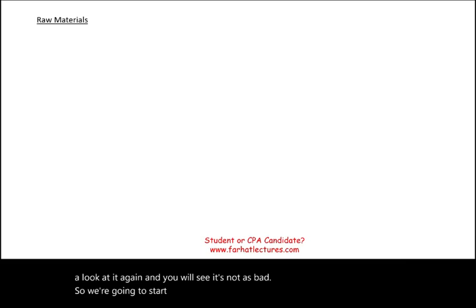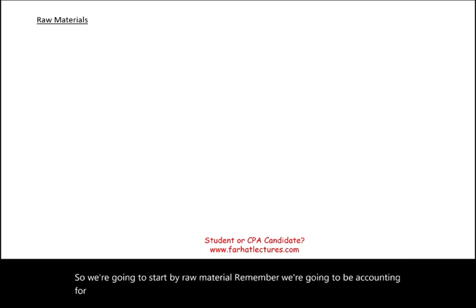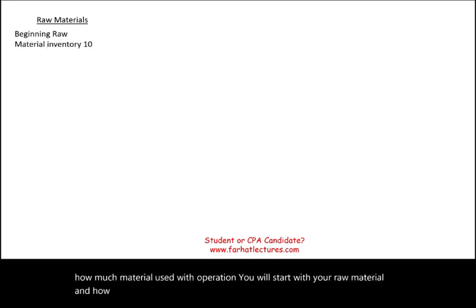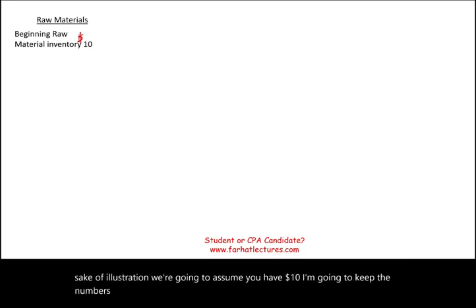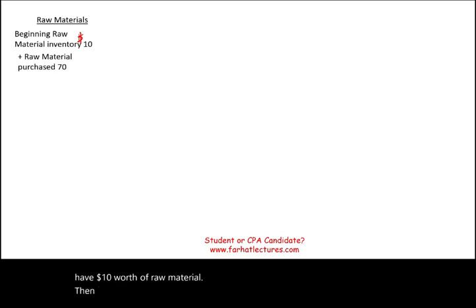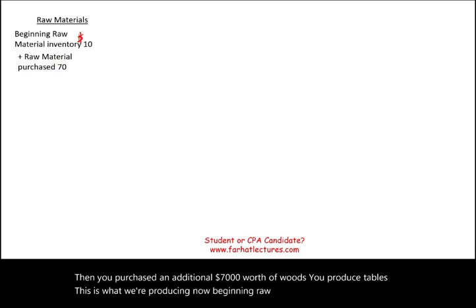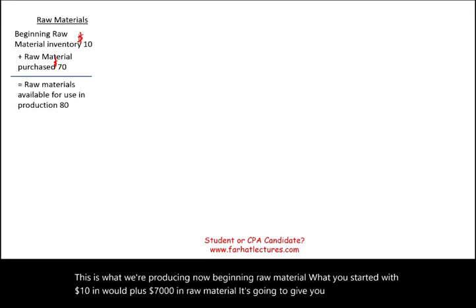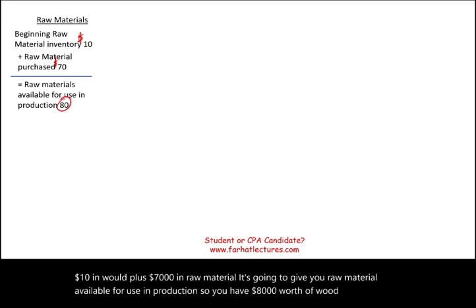We're going to start with raw material. We're going to be accounting for material, labor, and overhead. The challenge with material is you need to compute how much material was used in operation. You start with raw material beginning inventory — for illustration, assume $10 of beginning raw material. Then you purchased an additional $70 worth of wood. Beginning raw material $10 plus $70 purchased gives you raw material available for use in production: $80 worth of wood to produce tables.